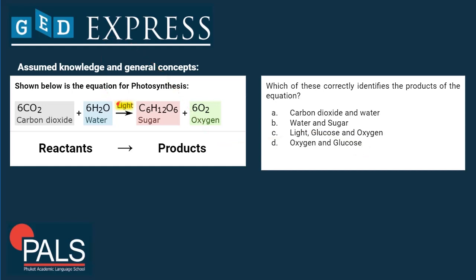Light is on top of the arrow. This means it is important for the reaction, but it's not a reactant or product in the reaction. Furthermore, light is electromagnetic radiation, so it doesn't contain any matter. It's not a chemical substance, so it can't be part of a reaction in terms of being a reactant or product. So the correct answer here is D — oxygen and glucose.